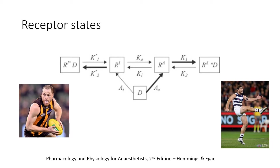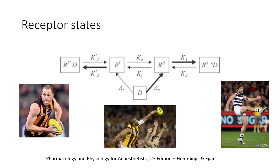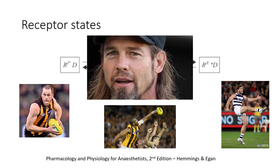Likewise, I used to think of a competitive antagonist as a full back who kicks own goals, but it's probably more accurate to think of it as a player who simply gets in the way of the opposing forwards. A full agonist would be a player of your choosing in his heyday. An inverse agonist doesn't exist in AFL because it is impossible to kick an own goal, at least not in a literal sense.